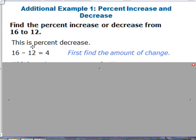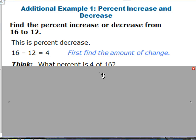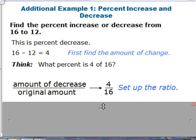So the first step is to find the amount of change. It's changing by 4, we just subtract 16 and 12 and we'll get 4. And then we have to think what percent is 4 of 16? Well we just set up the ratio using our lovely formula here. The amount of decrease, or the amount of change in this case, is 4 over our original amount which is 16.